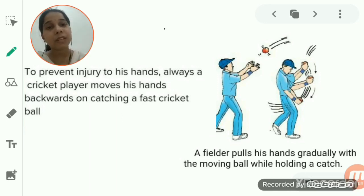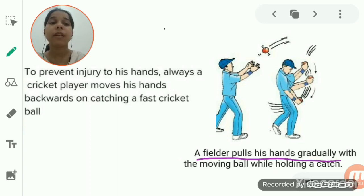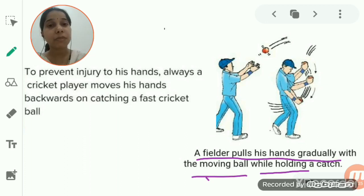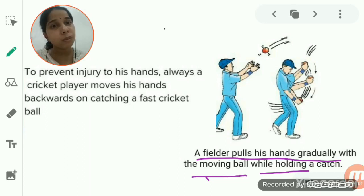The first application is the catching of a cricket ball. When a fast-moving ball comes to a fielder, he pulls his hand gradually backward while holding the catch. This is done to reduce or prevent injury to the player's hand.